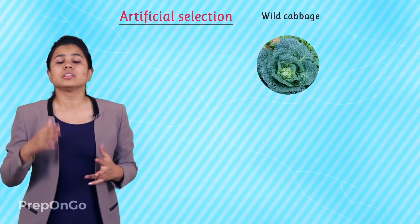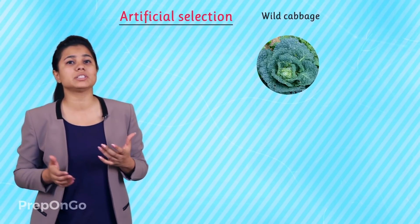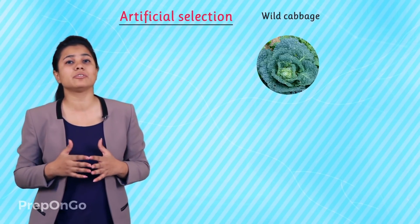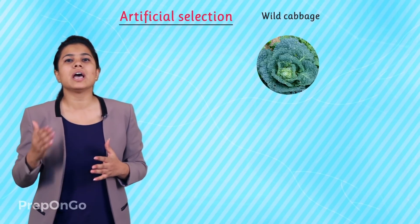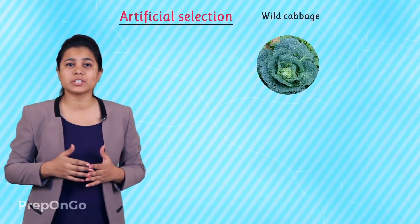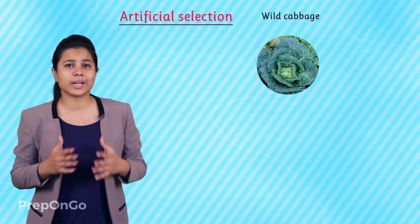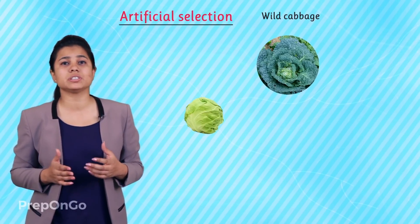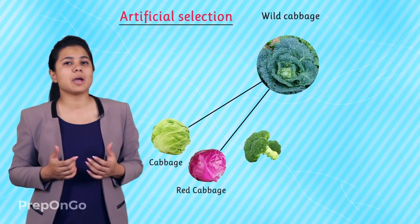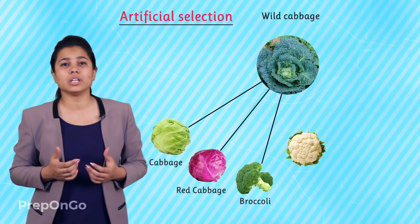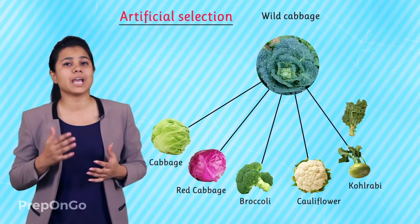Farmers have been cultivating wild cabbage as a food plant for over thousands of years, and by artificial selection they have generated a variety of species like cabbage, red cabbage, broccoli, cauliflower, kohlrabi, and kale.